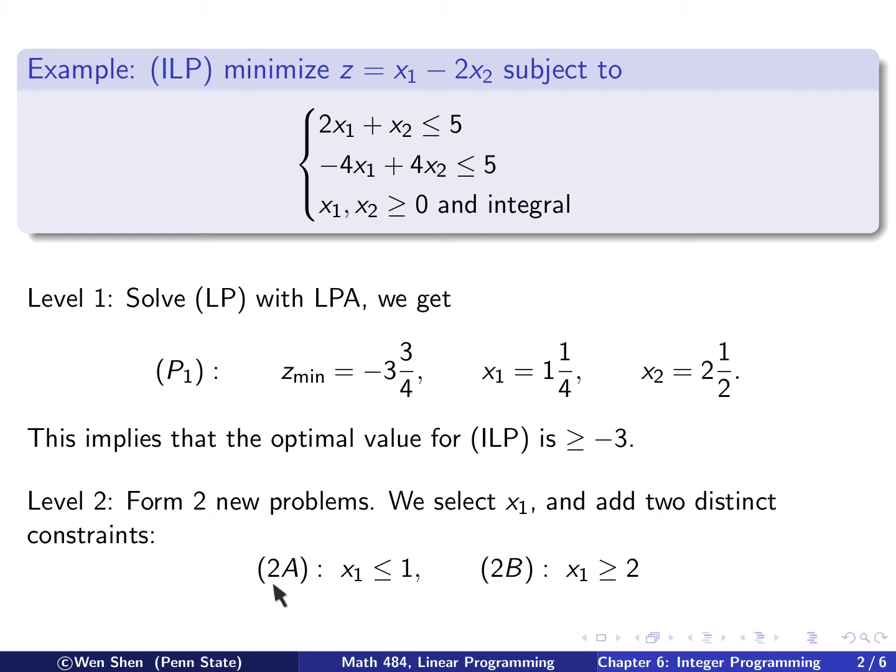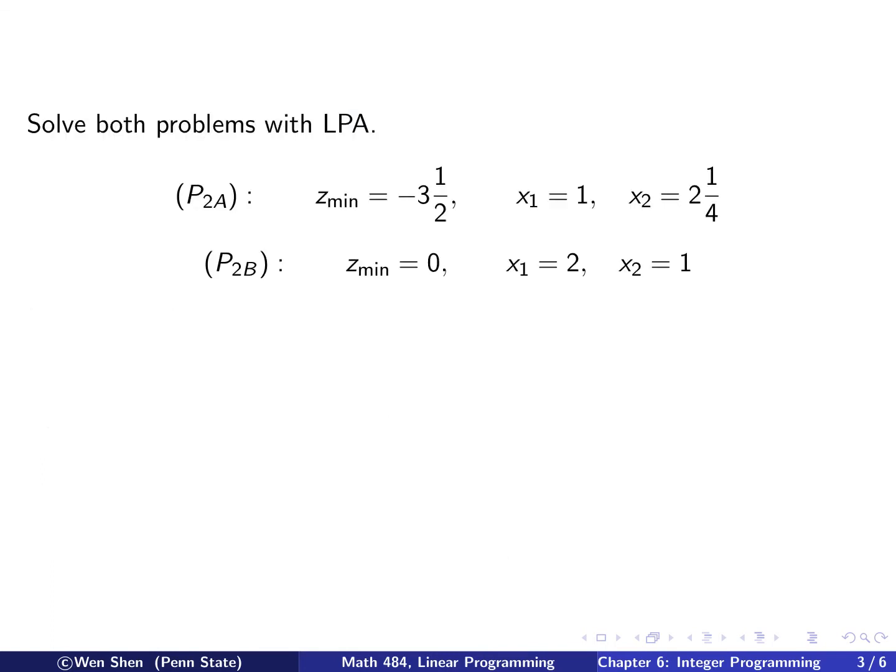So x1 now is one and a quarter. So this is a number between the two integers, one and two. So here's how you form the constraint. You form a sub-problem 2a by adding an additional constraint, x1 less than one, the smaller integer. And then the other problem by requiring x1 to be bigger than two, the bigger integer. So this x1 will lie between one and two. And then we see that these two constraints are exclusive of each other. The intersection of these two sets is empty.